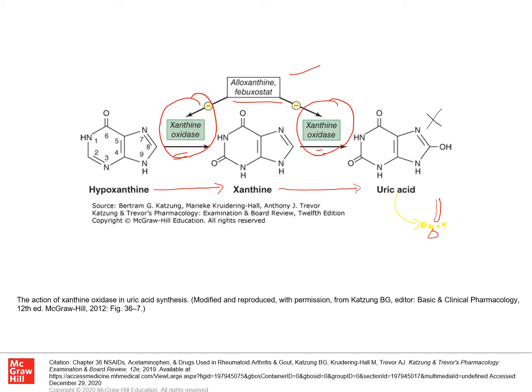When you have excess uric acid being formed, these crystals sediment in the joint and lead to inflammation, swelling, and pain. So all of this is the root cause of excess uric acid formation. If you block xanthine oxidase — which allopurinol and febuxostat do — you prevent the formation of uric acid and decrease all the symptoms associated with excess uric acid deposition.